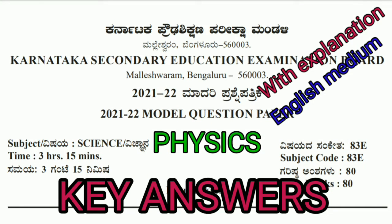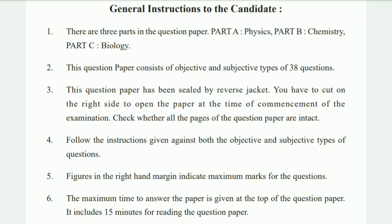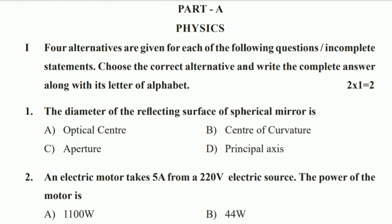Hi dear students, today let us learn the key answers for the KEBS model paper 2021 and 22. There are a few general instructions: this paper contains three parts — Part A: Physics, Part B: Chemistry, and Part C: Biology. In this video we are going to learn the Physics part first.